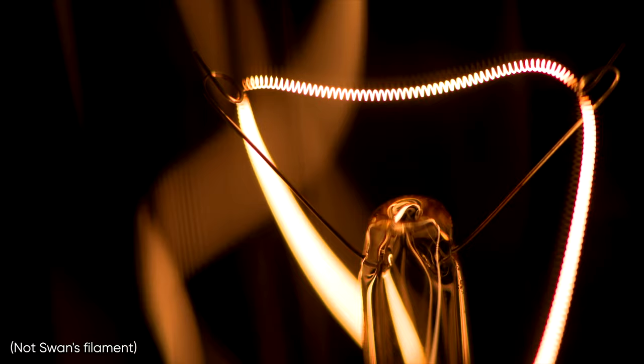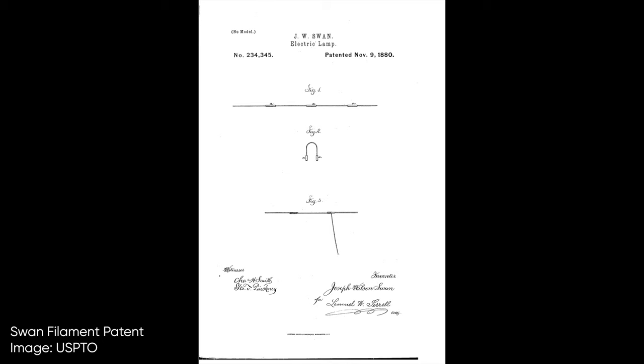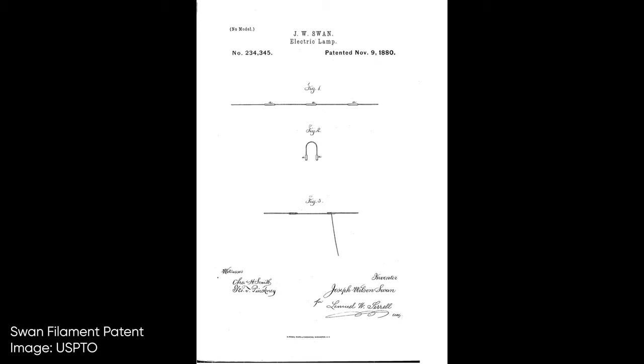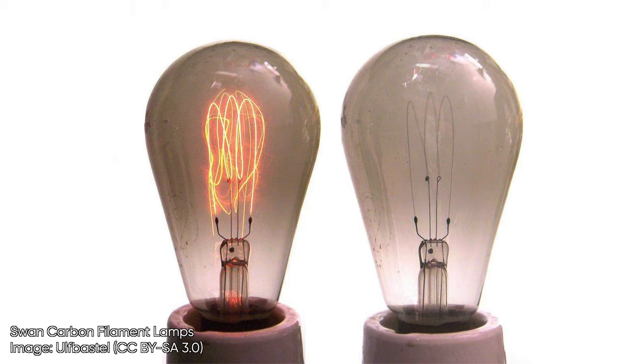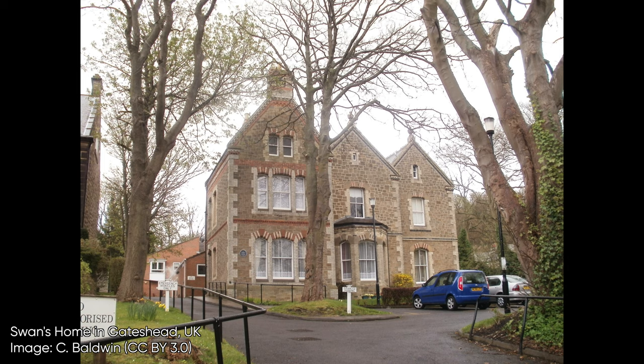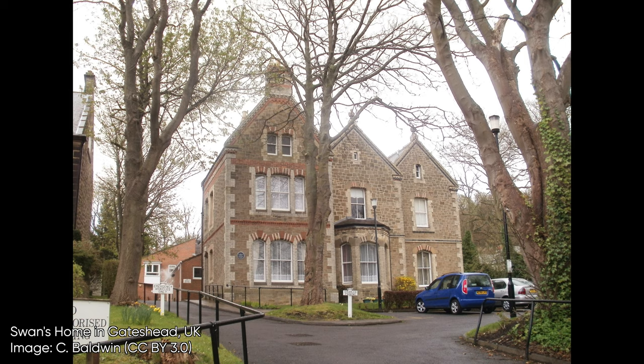The filament had low resistance, meaning the lamp had to be supplied with heavy copper wires. Swan improved the filament by treating cotton to produce parchmentized thread. He received a patent in November 1880 and began selling the bulb commercially throughout England. He started manufacturing the bulbs for commercial sale in 1881.